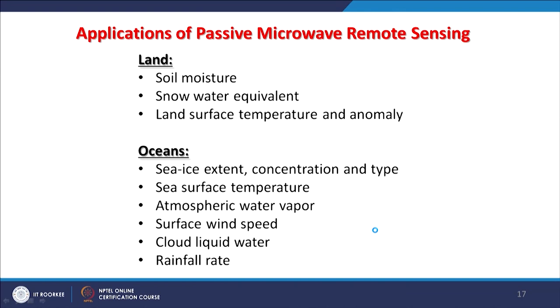Applications of passive microwave remote sensing for land include soil moisture studies, snow water equivalent, and land surface temperature and anomalies. For oceans and water, applications include ice extent and concentration, other types of sea ice, sea surface temperature estimation, atmospheric water, sea surface wind speed, cloud liquid water, and rainfall rate or precipitation intensity.